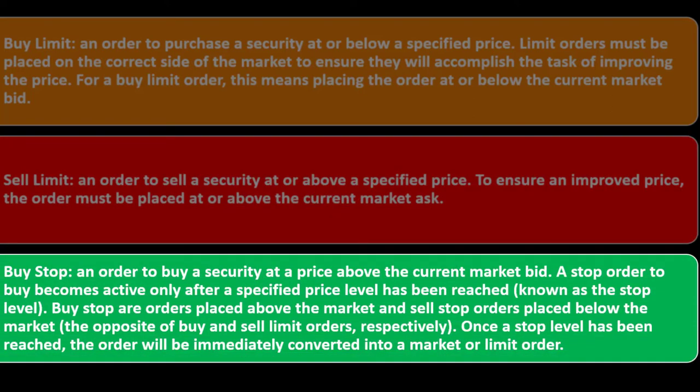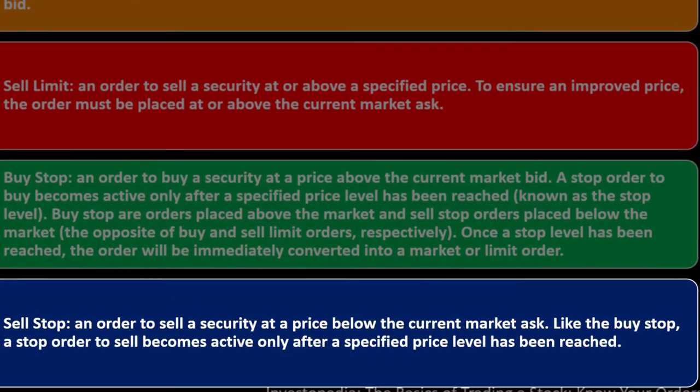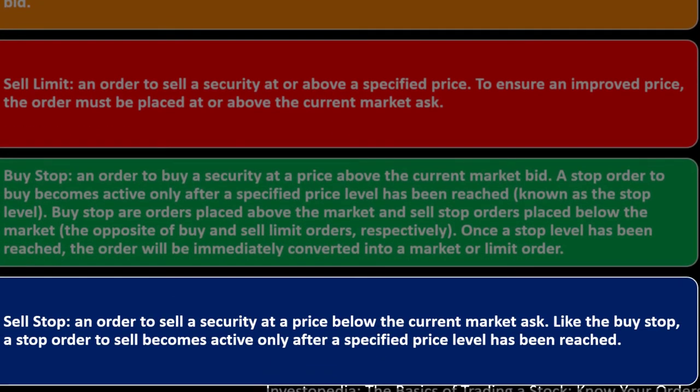A buy stop order is used to buy a security at a price above the current market bid — it becomes active only after a specified stop level has been reached. Buy stop orders are placed above the market. A sell stop order sells a security at a price below the current market ask and also becomes active only after a specified price level is reached. Once a stop level is reached, the order immediately converts into a market or limit order.